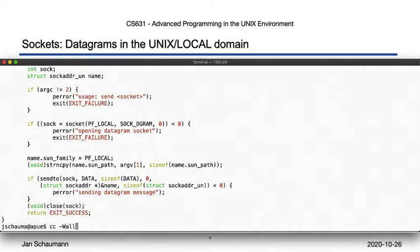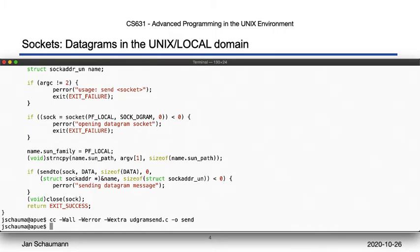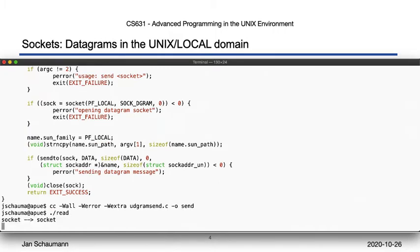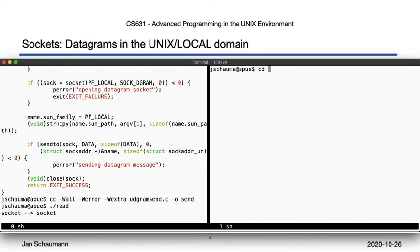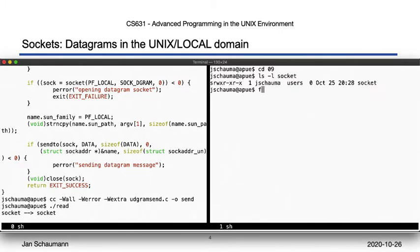Let's compile this program into an executable named 'send'. Now we start our reader — it creates the socket, prints its name, and then blocks, waiting for data to appear. We create a second shell and list the socket, which, as expected, we find to be of type 's' for socket, and size 0.